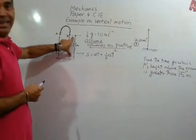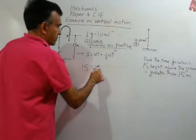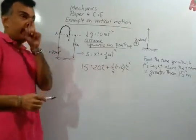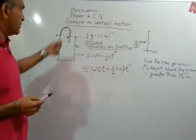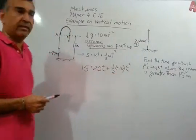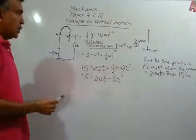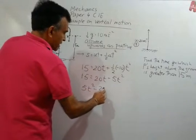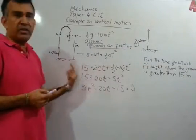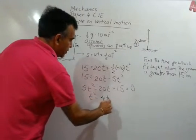We set the vertical displacement s = 15 meters. So: 15 = 20t + ½(−10)t², which gives 15 = 20t − 5t². Rearranging: 5t² − 20t + 15 = 0. Dividing through by 5 gives t² − 4t + 3 = 0.